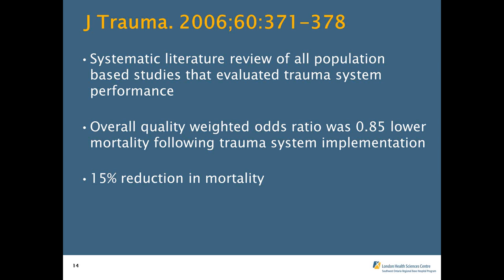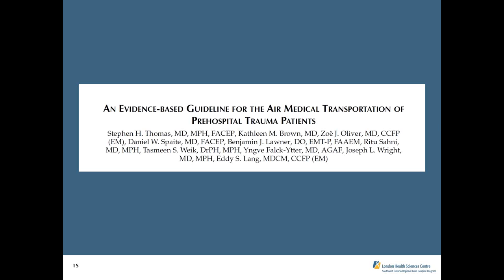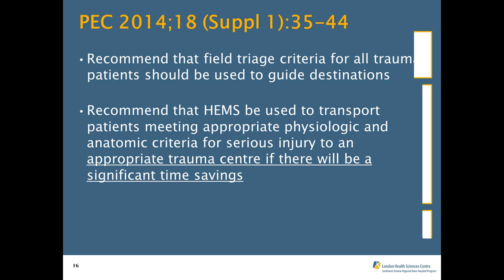Recommendations published earlier this year show the best evidence guideline for air medical transport of pre-hospital trauma patients. They recommended first using organized field trauma criteria to decide who is most injured and should go to a Level 1 trauma center — which is exactly what the Field Trauma Triage Standard is. They also recommend that helicopter EMS be used to transport patients meeting these criteria to an appropriate trauma center if there's a significant time savings.